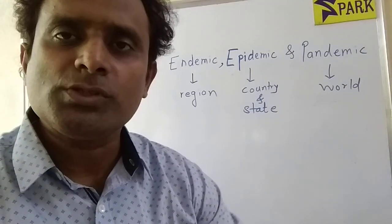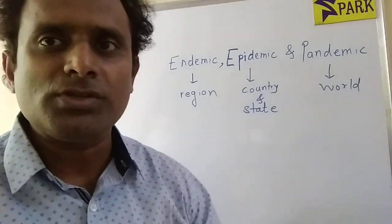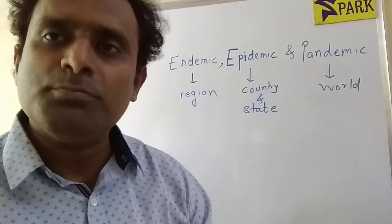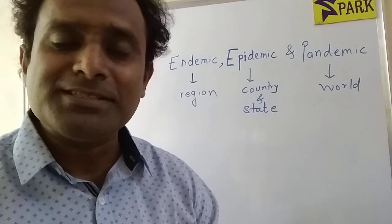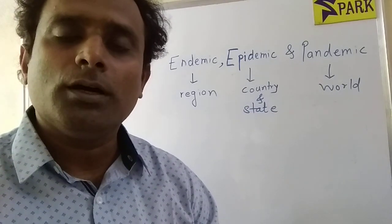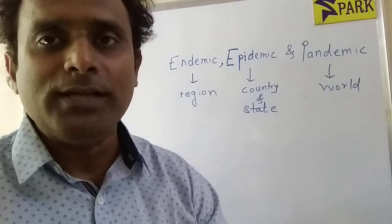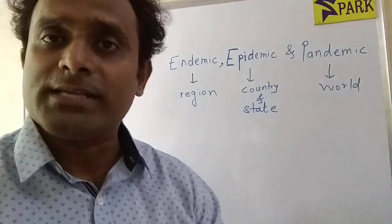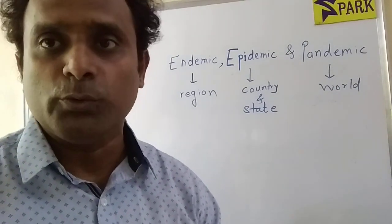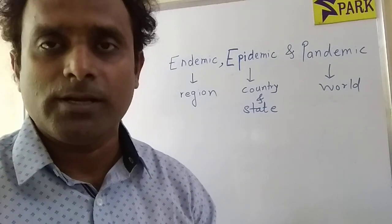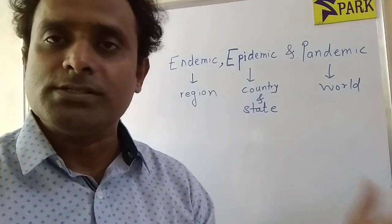In this series on words which are frequently confused, today we are going to discuss three words: endemic, epidemic, and pandemic. The word pandemic is very well known these days. We know that we are all suffering from a disease which has spread all over the world — I am referring to COVID-19 coronavirus, which has affected most people across the world. It is a global disease, and therefore the word pandemic is used. Even the WHO has declared this as a pandemic.